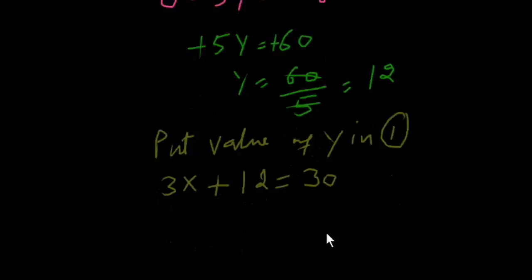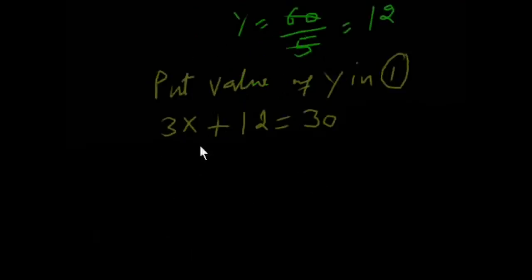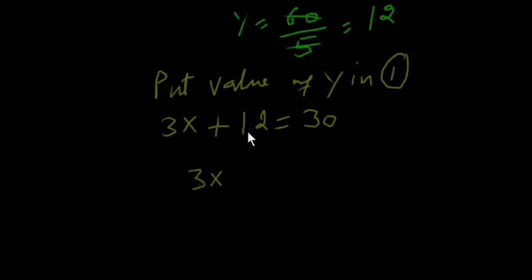Now value of x, 3x, this 12 will go to right side and its sign will be minus. 30 minus 12.